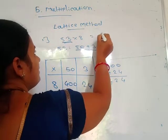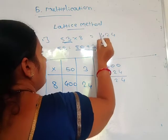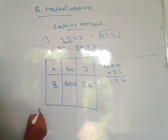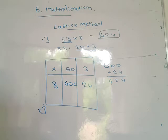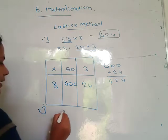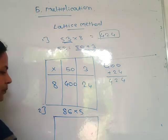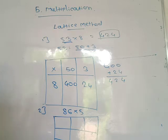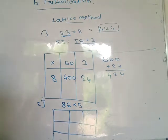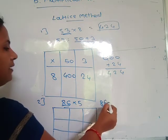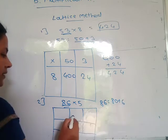You write 400 plus 24 — answer is 424. So 53 into 8 is equal to 424. Then again one example: 86 into 5. Then you make here a column. Write the expanded form of 86: 80 plus 6.